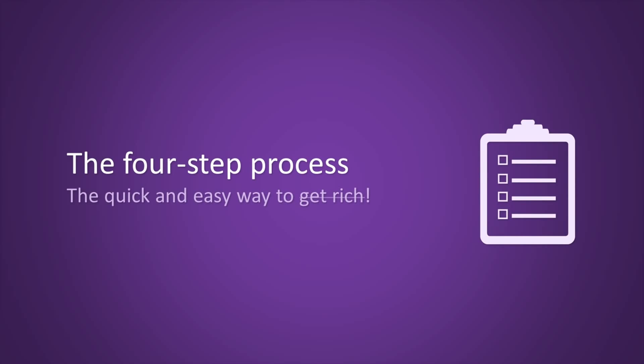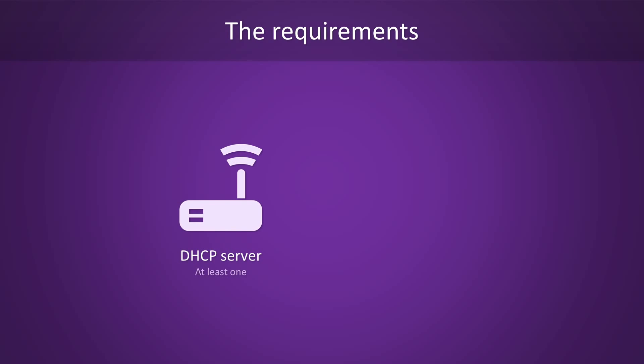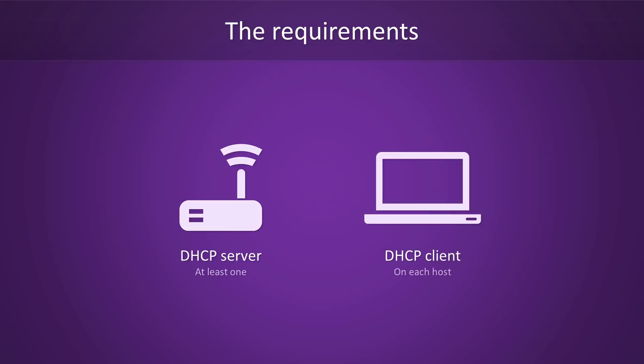Now that you get the gist of it, it's time to look at DHCP's four-step process in a little more detail. DHCP has two requirements, one of which being a server. You'll need at least one DHCP server on your network, but routers usually have one built-in. Secondly, every host on the network needs to run a DHCP client. There are ways to run DHCP alongside static IP addresses in your network, but let's not overcomplicate things right now and leave that aside.